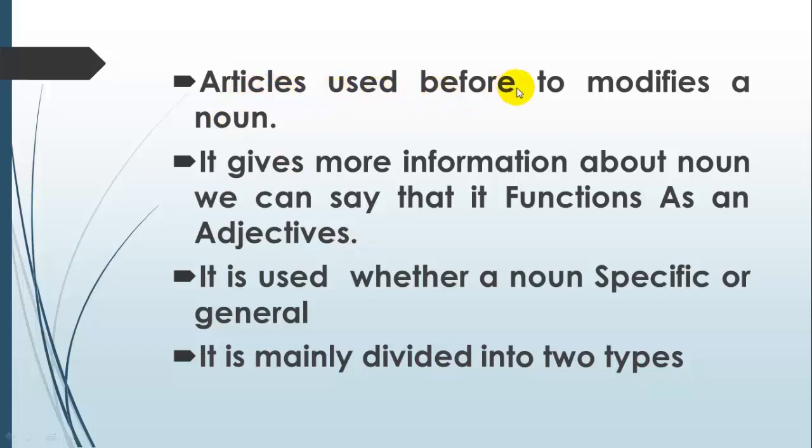Articles are used before nouns to modify them. They give more information about nouns. We can say that they function as adjectives. Articles are used whether a noun is specific or general. They are mainly divided into two types.